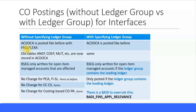Without specifying the ledger group, ACDOCA is posted just like before — with New GL it used to post to the FAGL_FLEX, and going forward it posts to the ACDOCA table. There is no change whether you specify a ledger group or not; all items are posted to ACDOCA. All interface postings that previously went to ANEP, COEP, and MLIT — the assets, controlling, and material ledger tables — are now posted to ACDOCA as well.